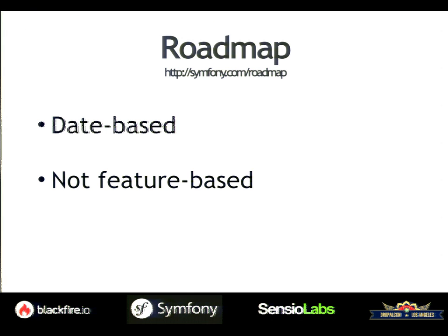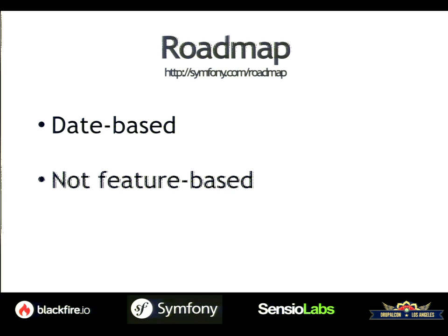The first thing we want is predictability. If a project depends on Symfony, you must know when a new version is coming out so you can plan the migration ahead of time. That means Symfony releases are not based on features but on a date. We know Symfony 2.7 will be released by end of month, and I can tell you when the next 10 releases will come out. That's very important for private projects, but also very useful for open source ones. Some projects like Laravel sync their releases with Symfony so they can upgrade easily.